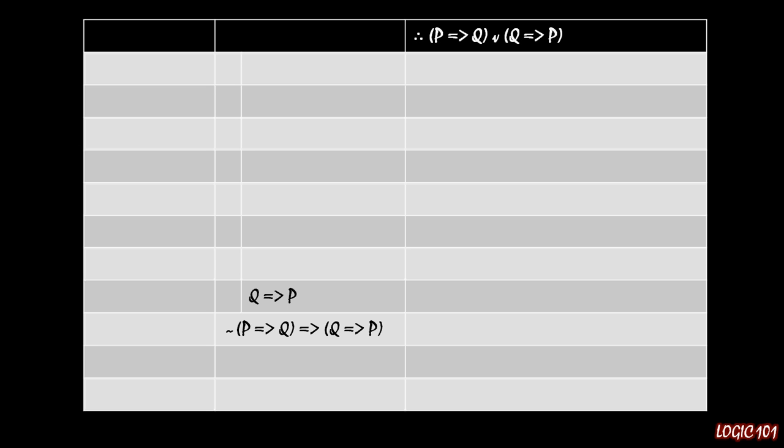We also know what to start the conditional proof with: the antecedent of the conditional statement we're trying to prove, which is 'not P implies Q.' So on line one, we're going to assume 'not P implies Q' as our assumption for the conditional proof, keeping the other two lines at the bottom to remind us where we're going — ultimately showing that assuming 'not P implies Q' lets us derive 'Q implies P' through the conditional proof. We didn't have any premises before, but the magic of the conditional proof is that we've effectively created a premise to work with.